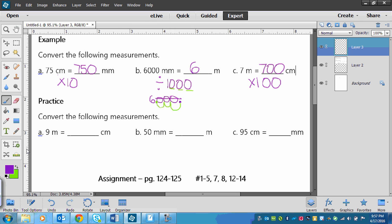Now you try the same thing. You're going to go from meters to centimeters, so big to small. Then millimeters to meters, small to big. And then centimeters to millimeters, big to small. So pause the video, try it out, and then follow along with me once you're finished to see if you got the right answers.